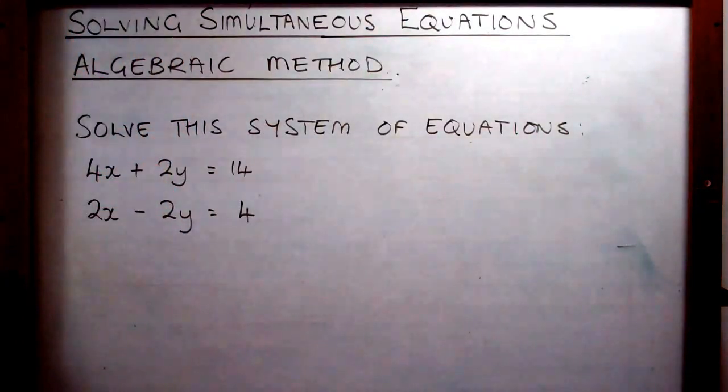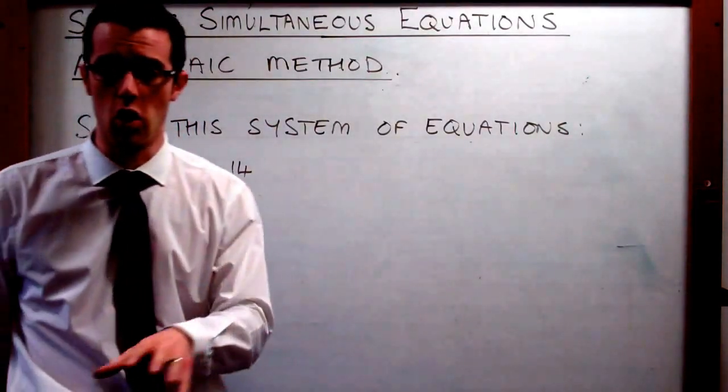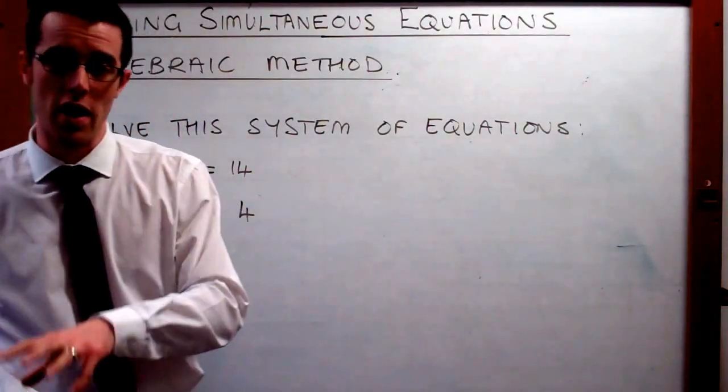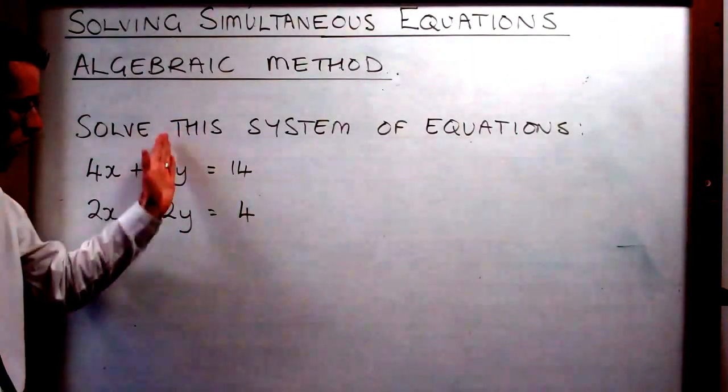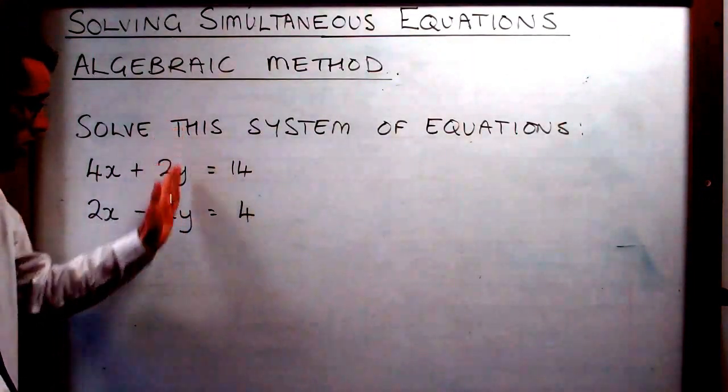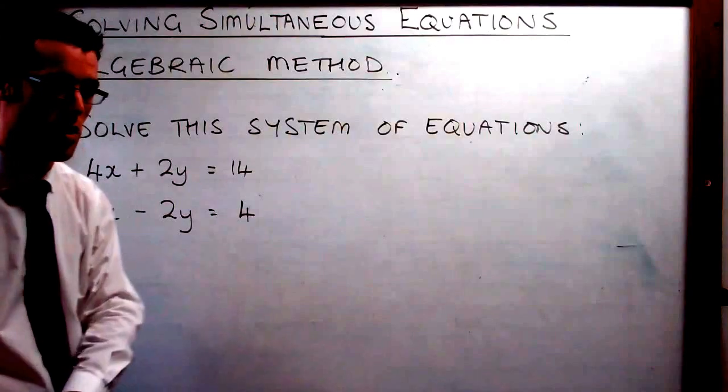So, this method is called the elimination method because what we want to do is we want to get rid of one of the unknowns. And in this case we're going to concentrate on getting rid of the y term or the term that's in the middle here. And this is how we do it.